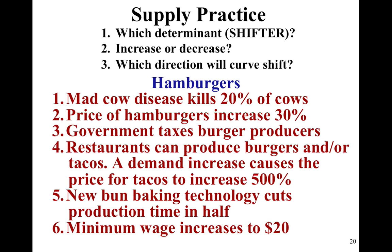Here are the six scenarios — pause the video if you'd like to try them. For scenario one, mad cow disease killing off 20% of cows: the determinant is price and availability of inputs, and it causes a decrease or inward shift. Scenario two, price of hamburgers increases 30%: that is a change in quantity supplied, not a change in the supply curve — the supply curve will not shift. That's the kind of pitfall to watch out for; be very careful in how you're reading the questions. Scenario three, government taxes burger producers: the determinant is government action and it causes a decrease or inward shift in the supply of burgers.